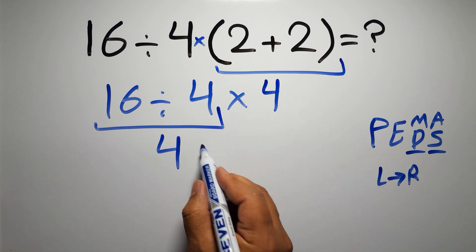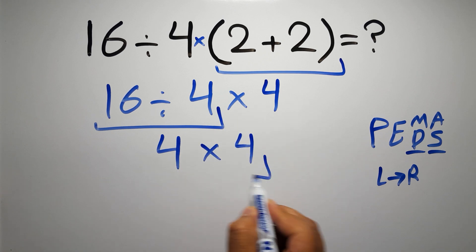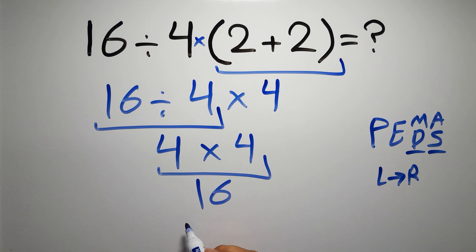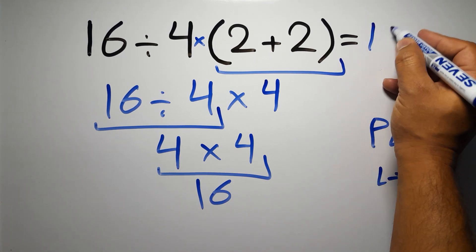So 4 times 4 is just 16, and this is our final answer to this problem. The correct answer is 16.